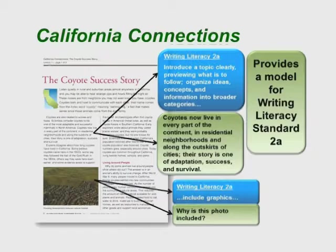I looked at the California Connections as a part of every unit, and I kept coming back to it. I was looking at the writing standards — this is a reading selection — and I noticed that this selection matched the writing standards exactly. I thought this would be a great model for writing the Literacy Standard 2A, because there are places where we have Writing Literacy 2A: introducing a topic clearly, previewing it, organizing ideas. There's an example right there in the first paragraph — a very clear thesis statement that tells you exactly what's coming ahead.